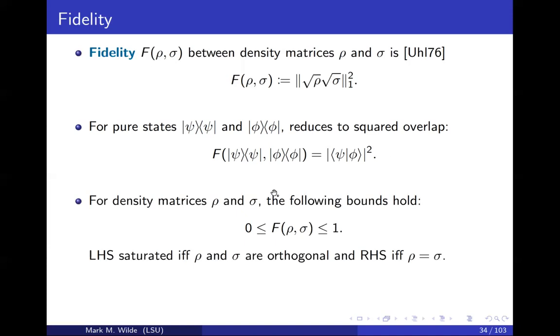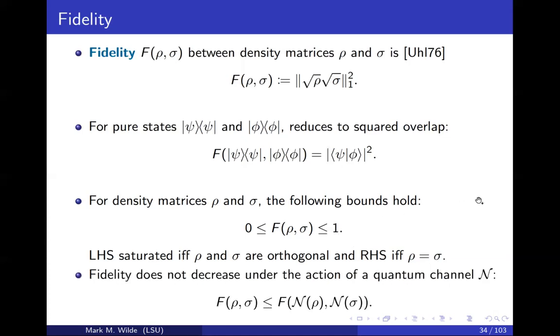For density matrices, you have similar bounds. The fidelity is always between zero and one, but the situation is the opposite of the normalized trace distance. In this case, since the fidelity is a measure of similarity, it's the opposite of a measure of distinguishability. And the left-hand side is saturated if and only if rho and sigma are orthogonal, meaning that they're perfectly distinguishable. The right-hand side is saturated if and only if rho and sigma are the same. So if rho and sigma are perfectly similar, meaning that rho equals sigma, then the fidelity is one. And fidelity is always opposite of trace distance. So that kind of data processing inequality that I mentioned on the last line of the previous slide, the fidelity increases under the action of a quantum channel that's common to both rho and sigma.